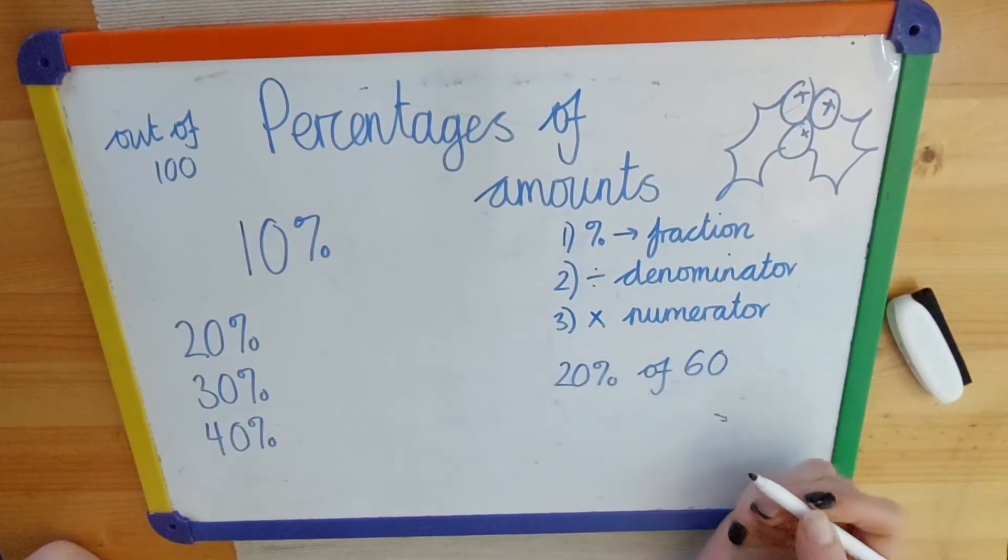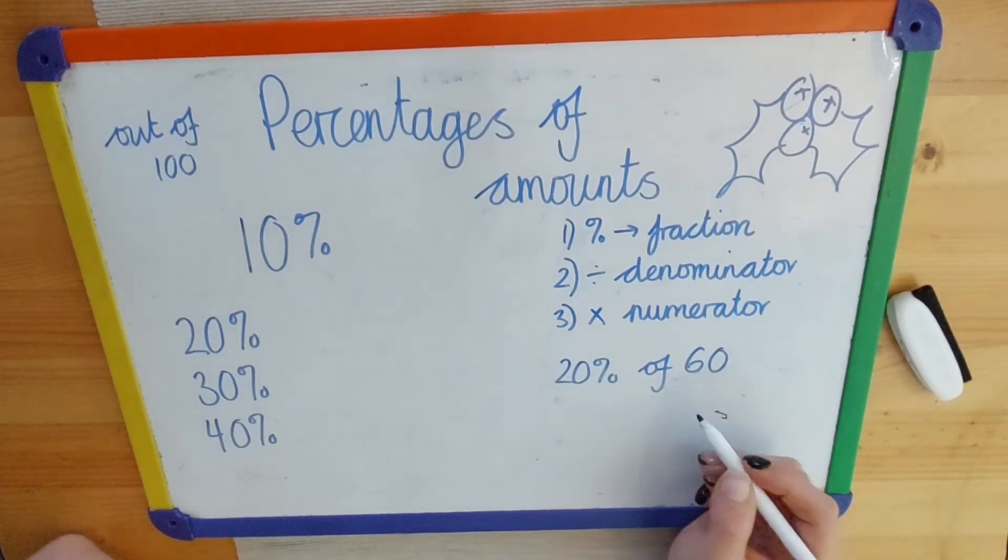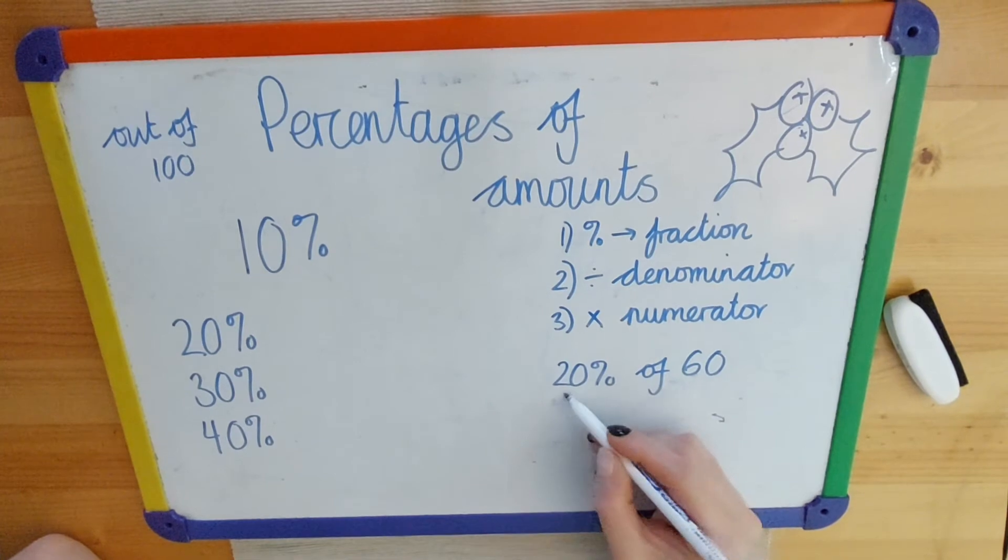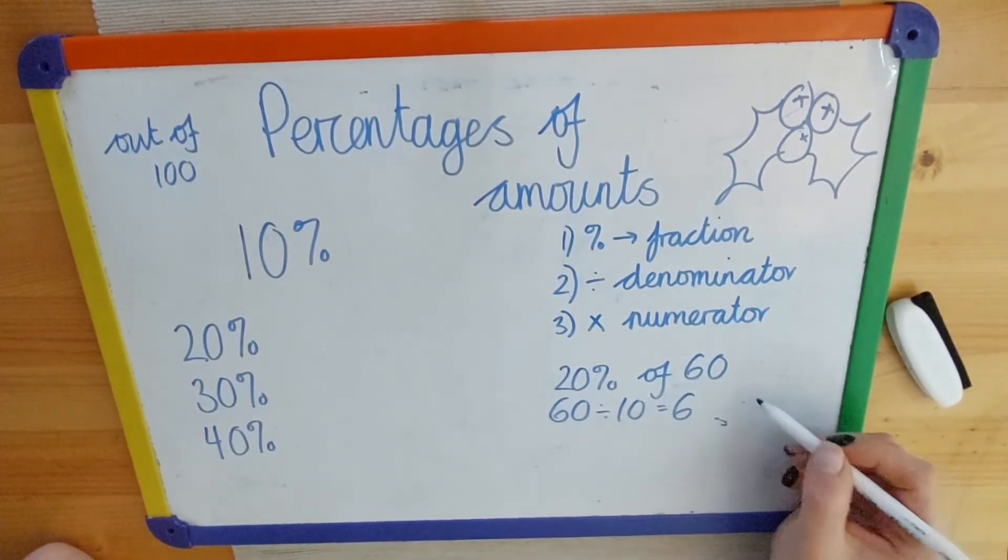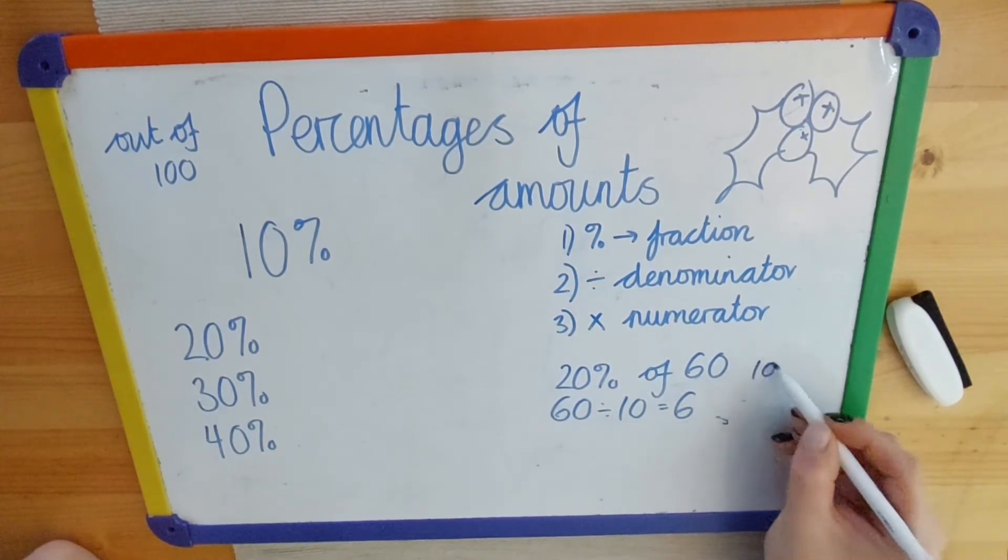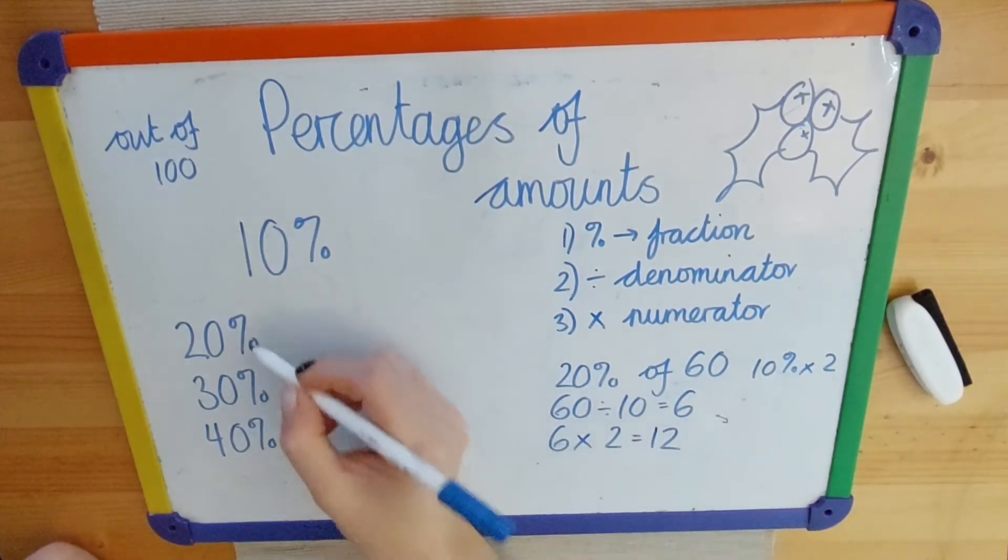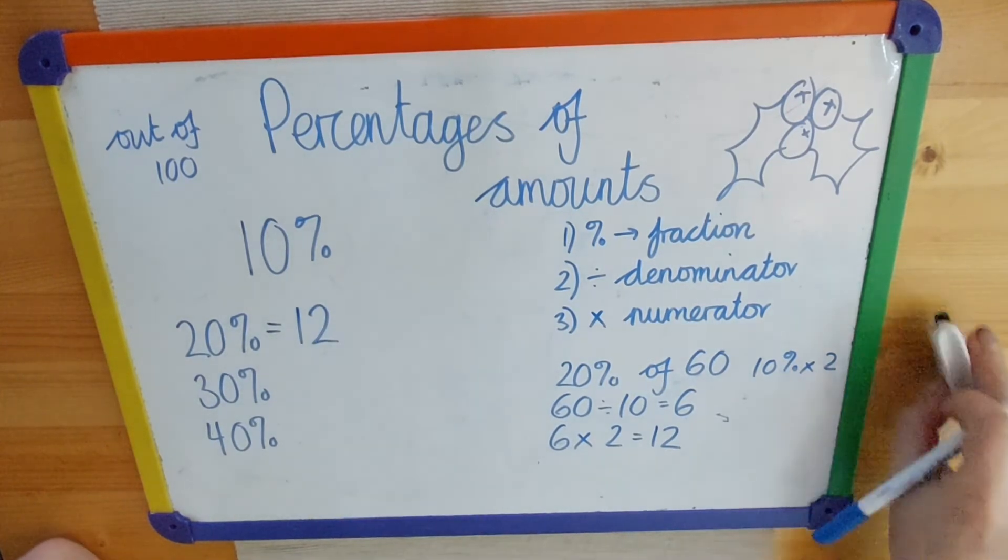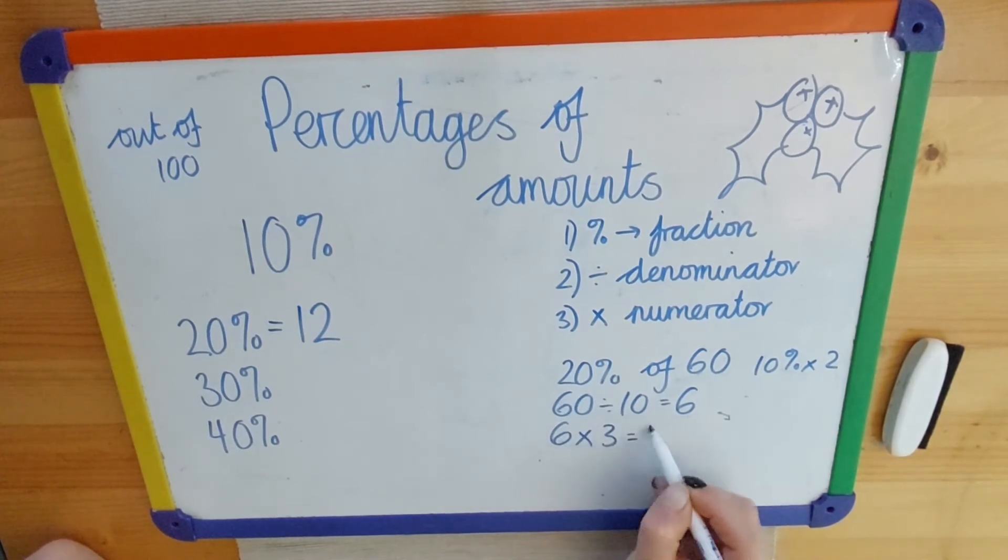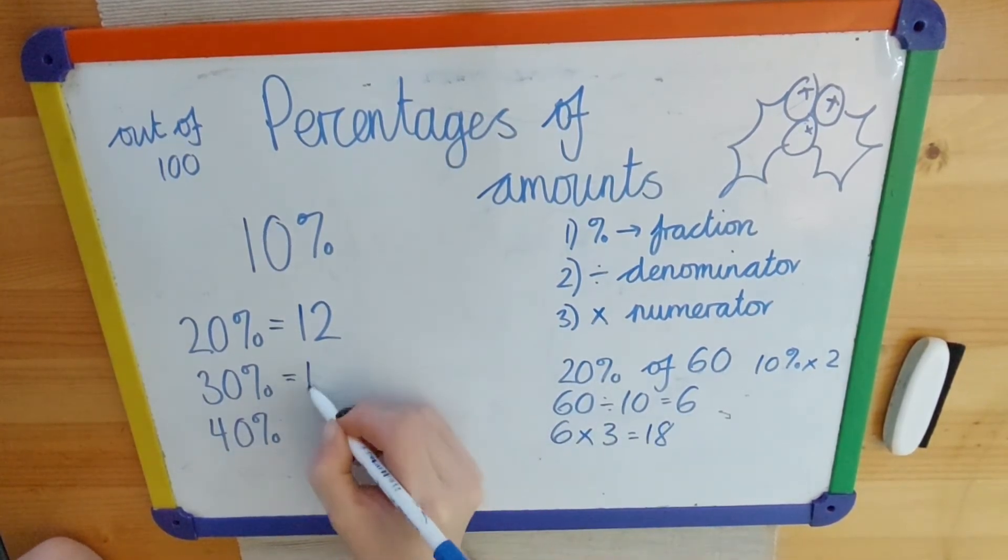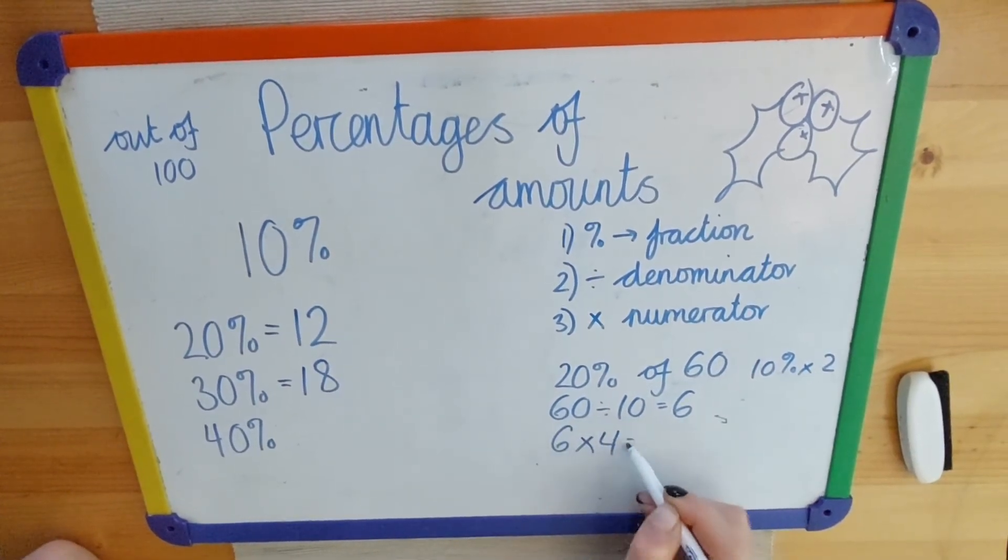Say, for example, I wanted to find 20% of 60. Well, I know that I need to divide by 10 to give me what 10% is, so 60 divided by 10 gives me 6. And then all I need to do, because I know that I times 10 by 2 to get me 20, I just need to do 6 multiplied by 2, which gives me 12. So 20% would be 12. If I wanted to find 30%, I would need to do 6 times by 3, which would give me 18. And then to find 40%, I would need to do 6 multiplied by 4, which would give me 24.